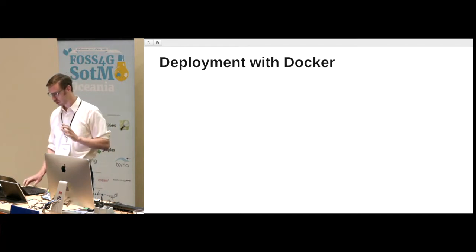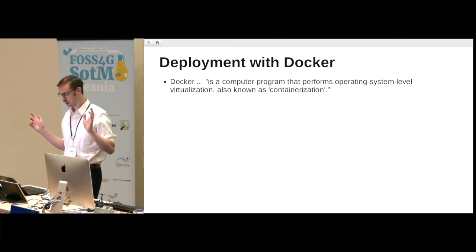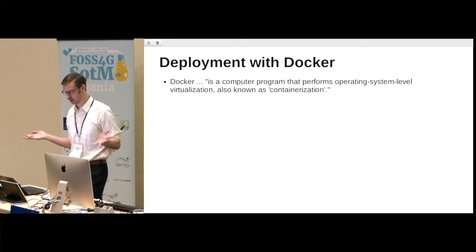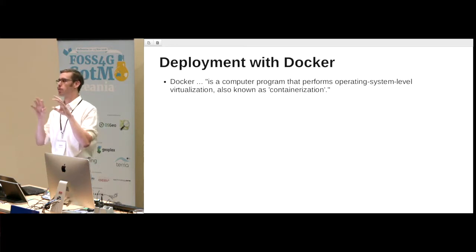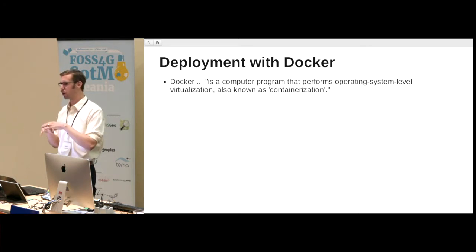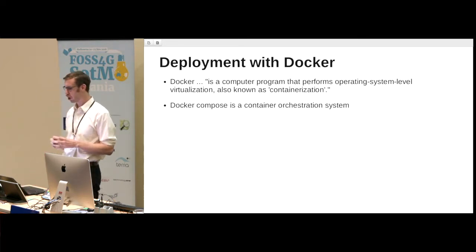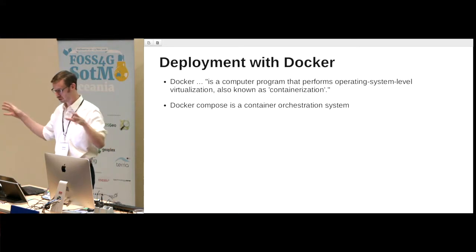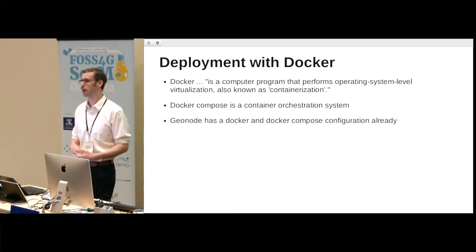In terms of making this solution as out-of-the-box and straightforward as possible: deployment with Docker. For those not familiar, Docker performs operating system-level virtualisation, also known as containerisation — we can run different components of our system as if they're on their own operating system, even though they're all on the same host. Docker Compose is a container orchestration system that defines how the components work together. GeoNode comes with Docker and Docker Compose configuration, which was a great help.